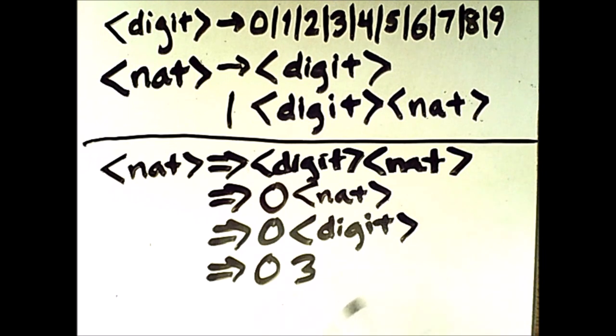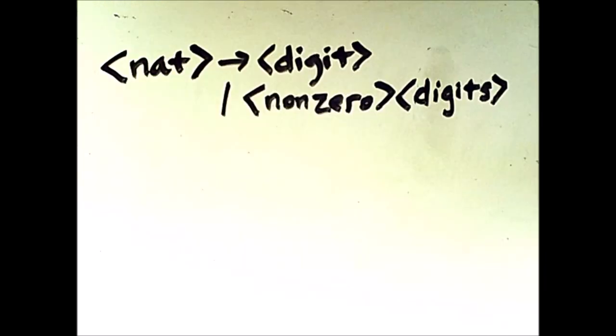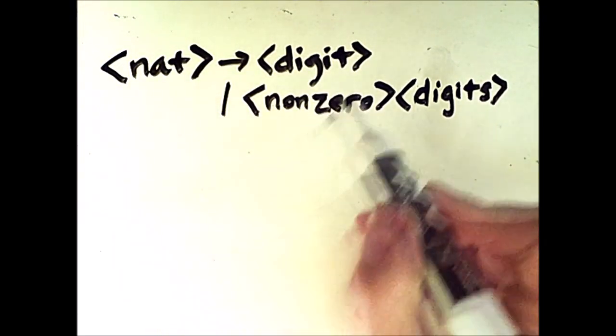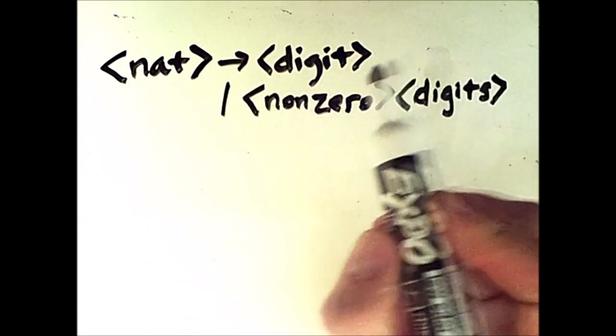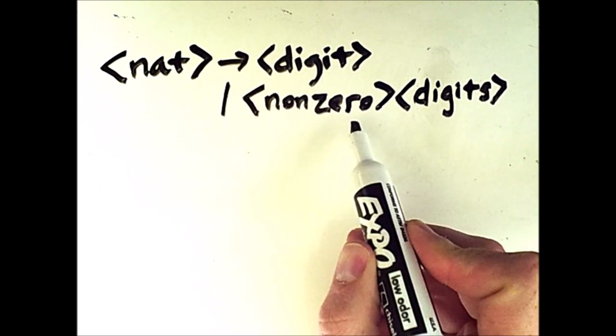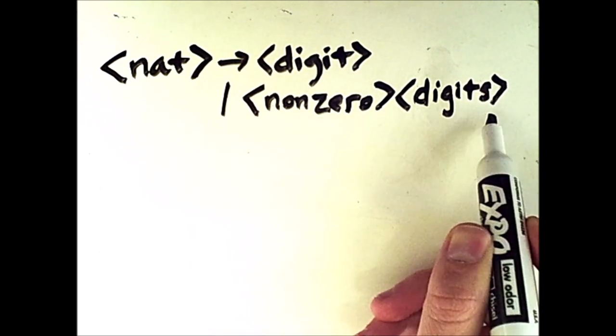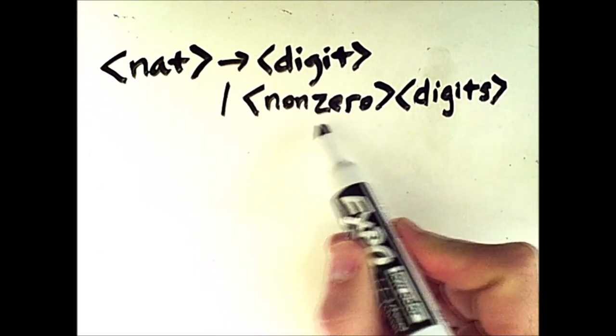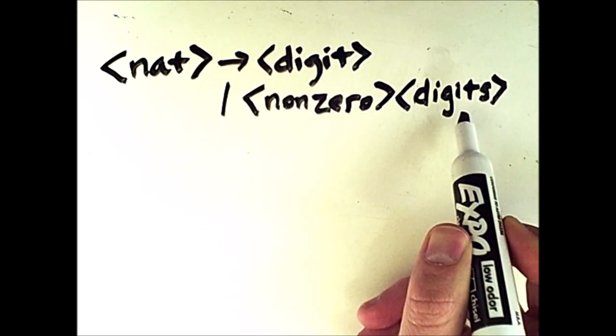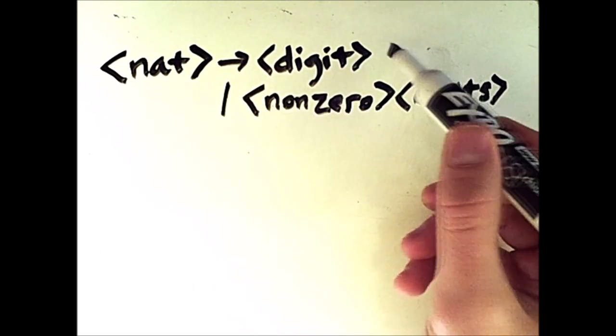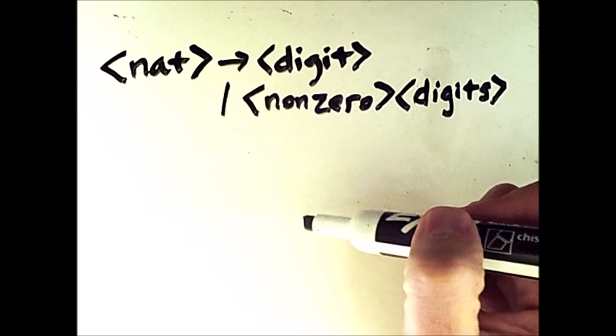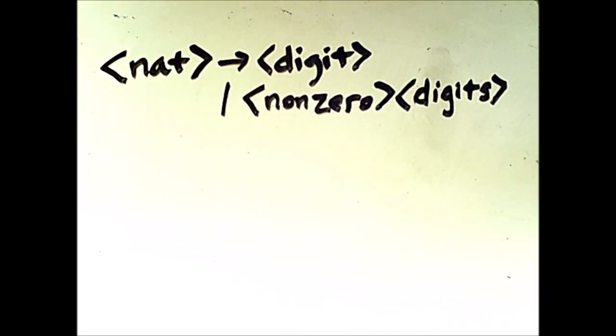So how do we fix this problem? One solution is to transform our grammar as follows. So I'm going to start from scratch and redefine a NAT to be either a single digit or something called a non-zero followed by digits. So these are two new non-terminals. And also, I need to redefine digit because I've erased that, and it's going to be slightly different this time around.